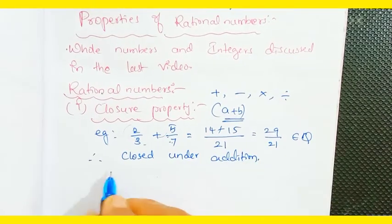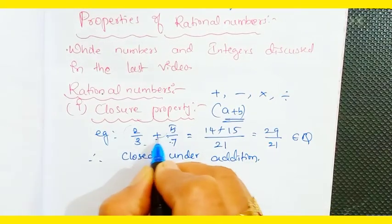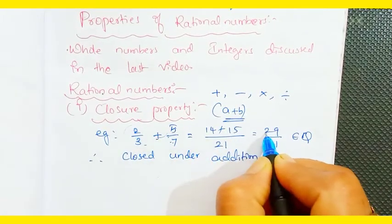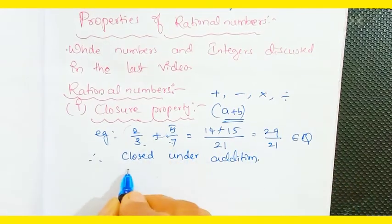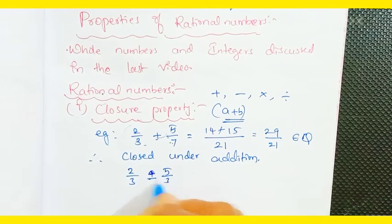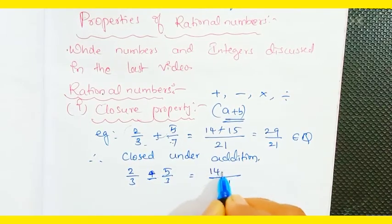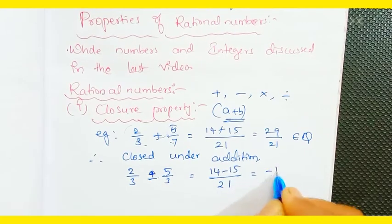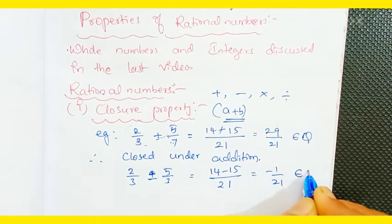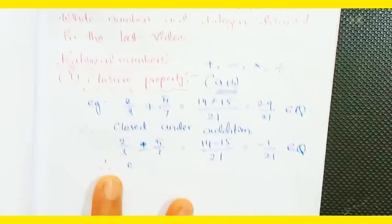Rational numbers are also closed under subtraction. If I take 2/3 minus 5/7, the LCM is 21, giving 14 minus 15 = -1/21, which also belongs to rational numbers. Therefore, rational numbers are closed under subtraction.